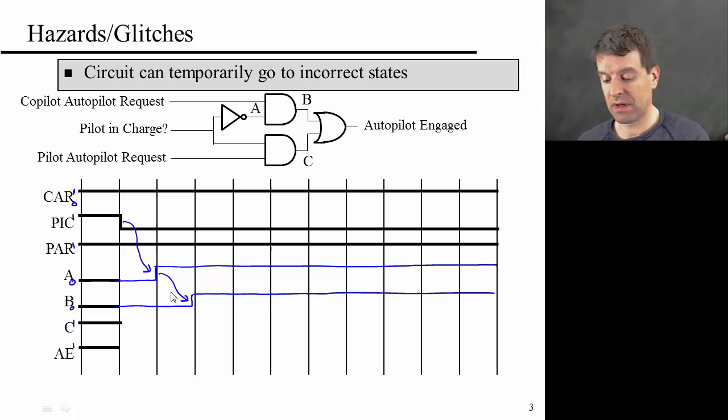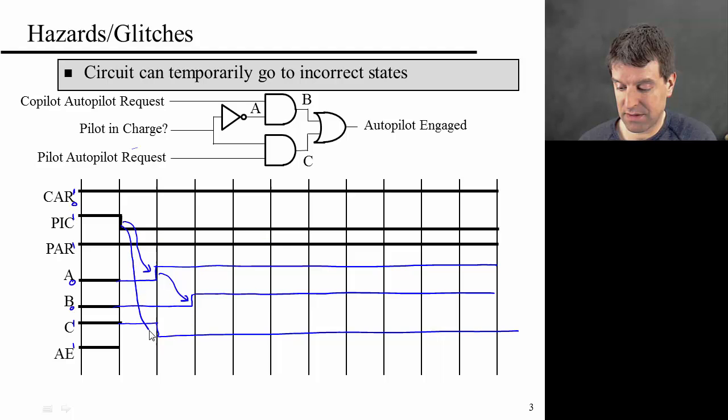Now C is an AND gate of pilot in charge and pilot autopilot request. So this is high initially and then goes low. Autopilot request is high. So C stays high initially and then drops down at this point because of this change.